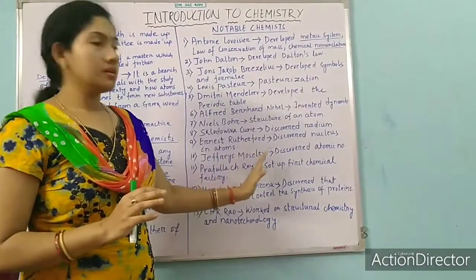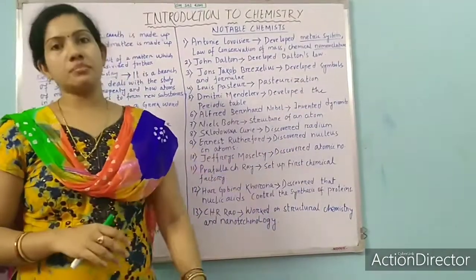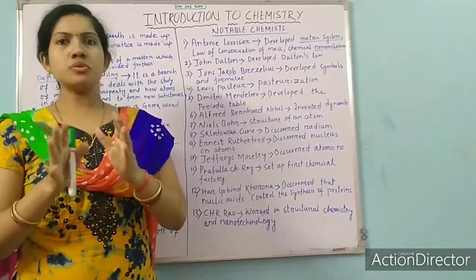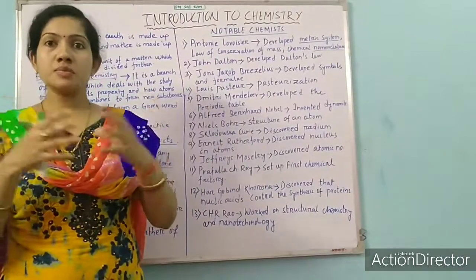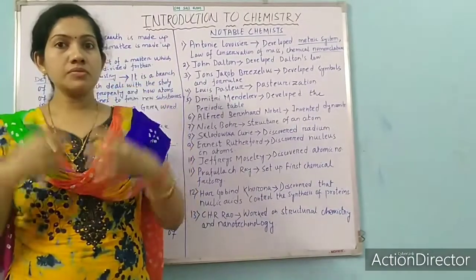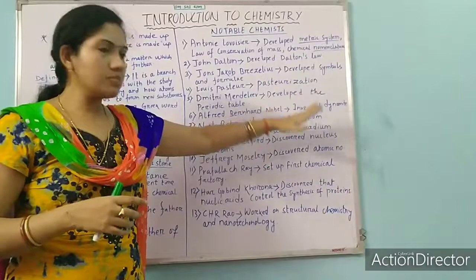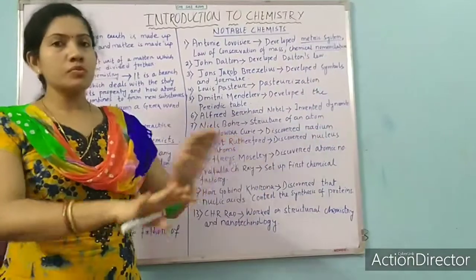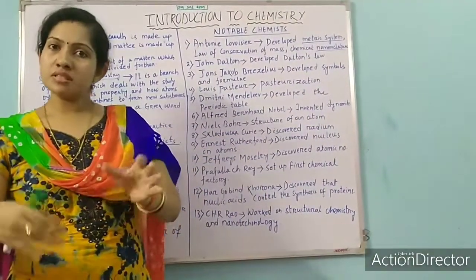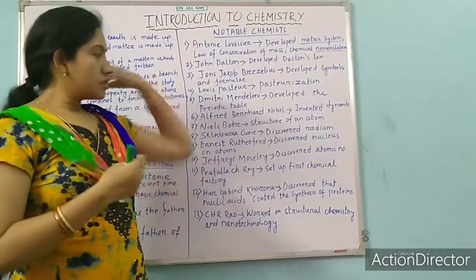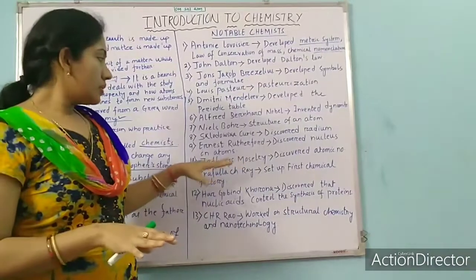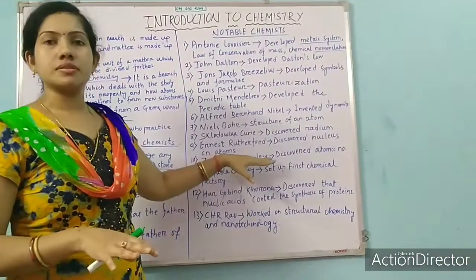Number 10 — Jeffrey Moseley discovered the atomic number. About all this, please don't get confused — I cannot explain all the terms at this time because it will cause confusion. Just remember the names of these terms; we will have a clear discussion about this in our next chapter. Jeffrey Moseley discovered atomic number.